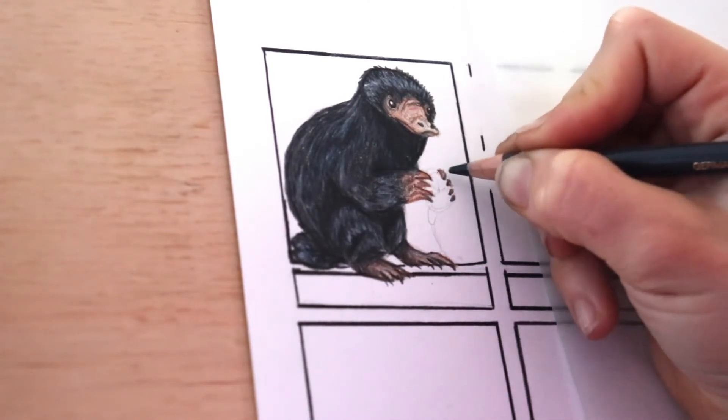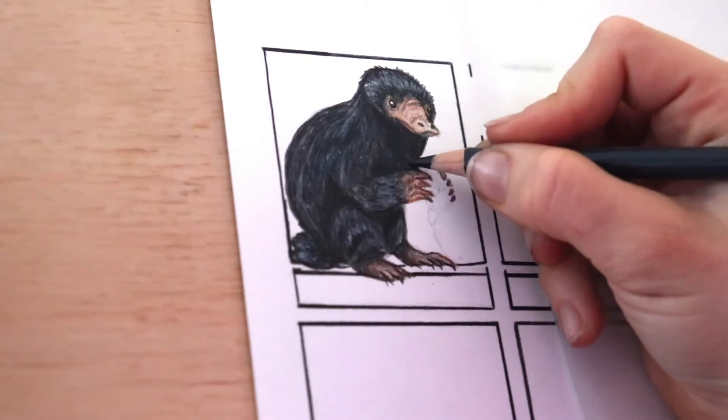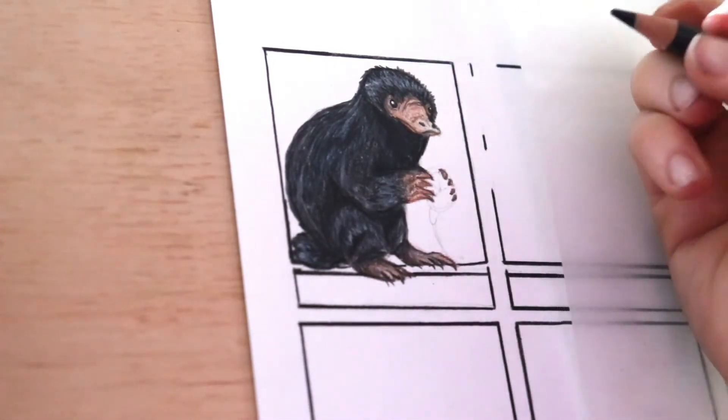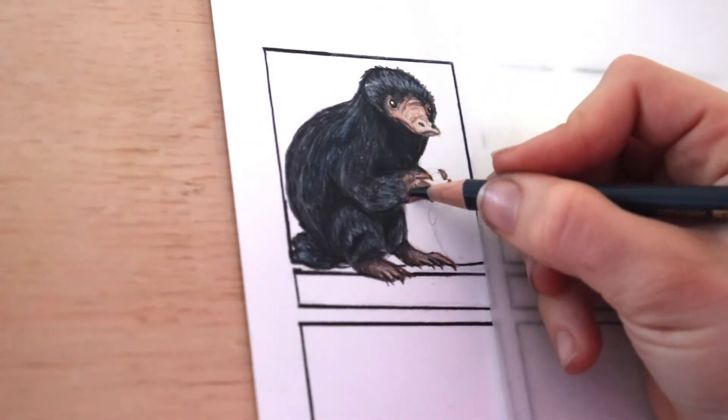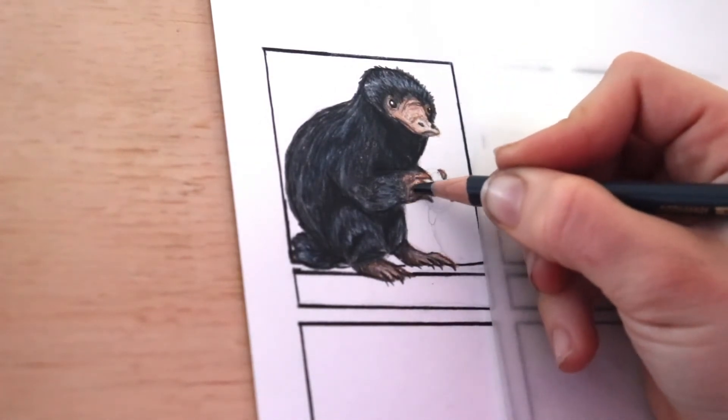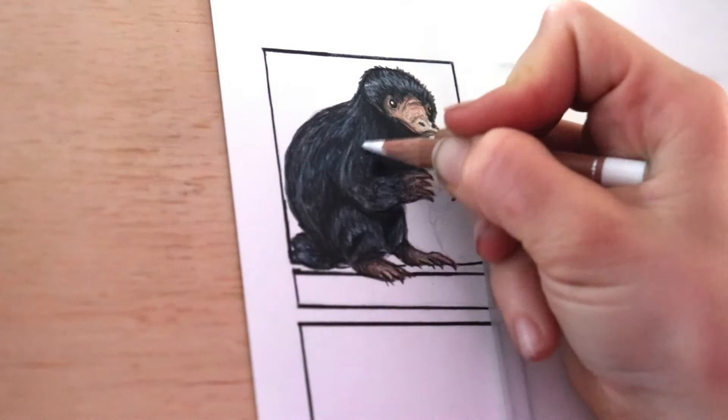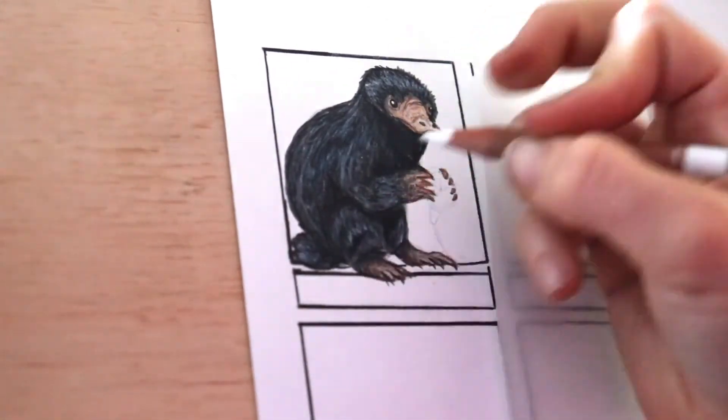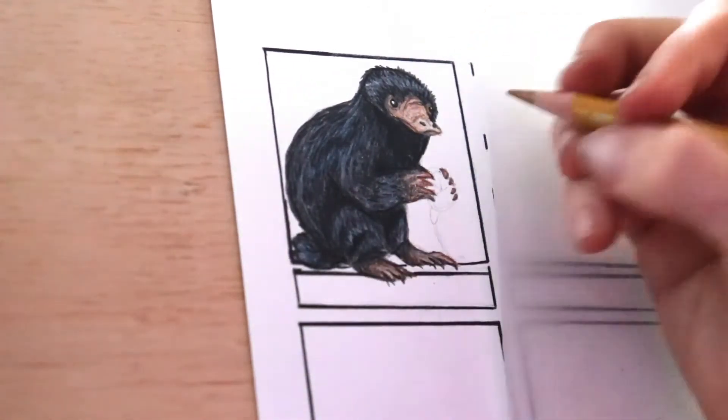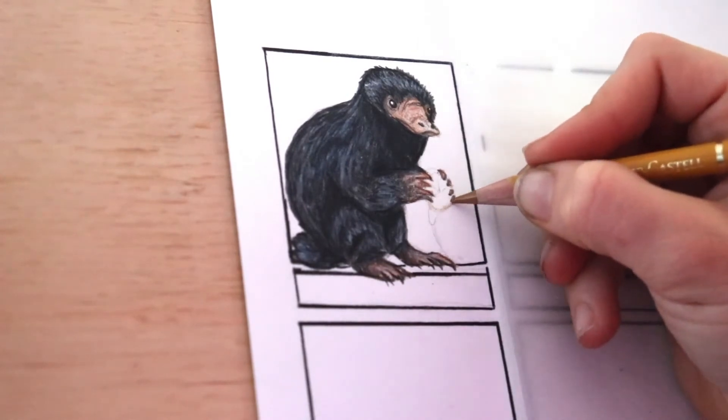This little creature, it's called a Niffler. He loves all shiny things. He has this pouch which you actually can't see. He's like a platypus or actually more like a kangaroo. He has this little pouch and he stores an incredible amount of shiny stuff in it. It's so funny. Anyway, I've went through and put a little more shadows on the black fur.